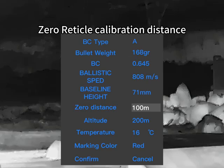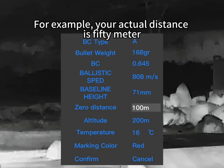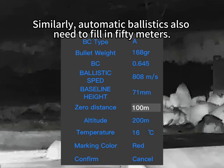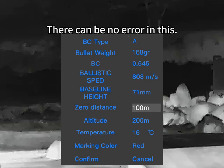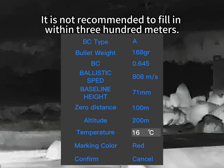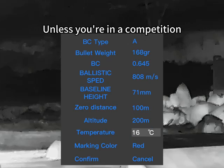The zero range must equal the actual target distance for your second zero reticle calibration distance. These distances must be consistent. For example, if your actual shooting distance is 50 meters, then the zero range should be filled in as 50 meters. Similarly, the automatic ballistics field also needs to be filled in as 50 meters — there can be no error in this.